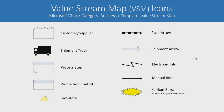You're now ready to do a value stream map of a process, a particular product, or a service to have an understanding of what's really going on from a high-level perspective. But before you can even start, you need to understand the icons. These icons are very specific: you have your customer and supplier icon, shipment truck, process steps, production control, inventory, and arrows. There's a push arrow, a shipment arrow, an electronic information arrow, and a manual straight arrow.